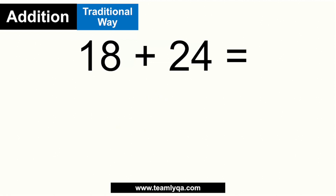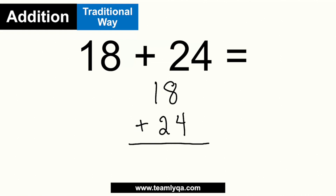If you are going to use the traditional way of adding these two numbers, we rewrite them vertically: 18 plus 24. We solve from right to left, starting with the ones column. Eight plus four gives us 12 — write down the 2, carry the 1 to the tens column. Then 1 plus 1 plus 2 gives us 4. The answer is 42.